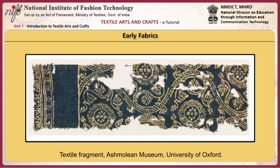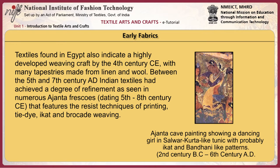Yarns and cloth were dyed and printed from very early times. Specimens of dyed fabrics have been found in Roman ruins of the 2nd century BCE. Tie and dye effects decorated the silks of China from the Tang dynasty, and there is ample evidence of production of woven and printed textiles in India dating from the 4th century BCE. Textiles found in Egypt also indicate a highly developed weaving craft from the 4th century, with many tapestries made from linen and wool. Between the 5th and 7th century, Indian textiles had achieved a degree of refinement as seen in numerous Ajanta frescoes, featuring the techniques of printing, tie-dye, ikat and brocade weaving.